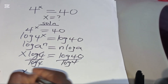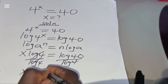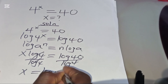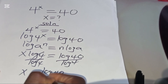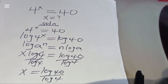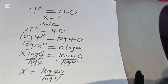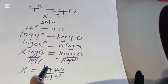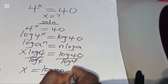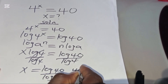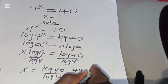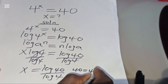Now we divide both sides by log(4), so that the value of x is equal to log(40) divided by log(4).